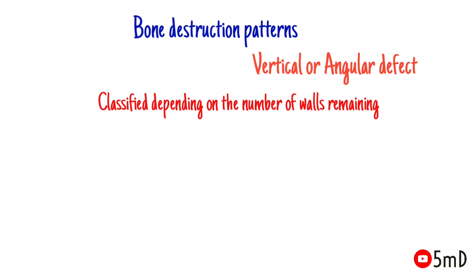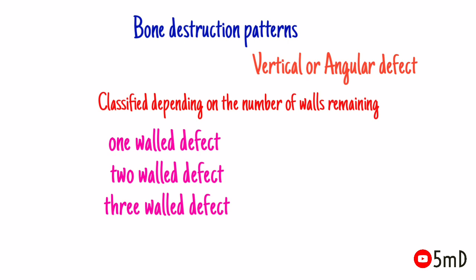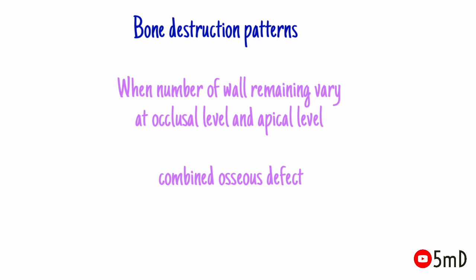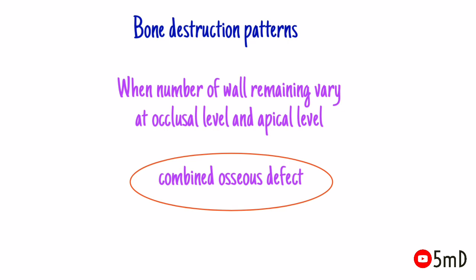These angular defects, depending on the number of walls remaining, are classified as one-walled defect, two-walled defect, or three-walled defect. A one-walled defect means only one wall remains, and so on. When the number of walls remaining varies at the apical level versus the occlusal level, they are called combined osseous defects.